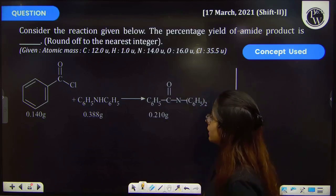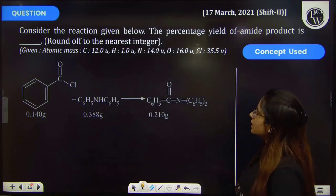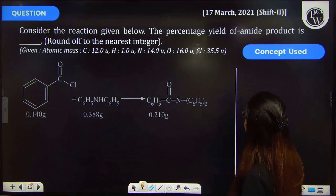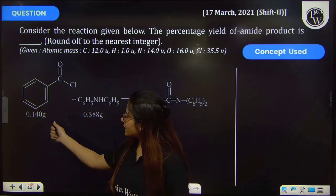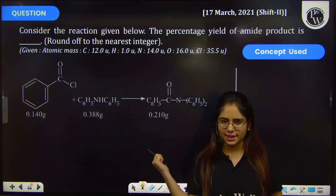Let's see this previous year question. The question says consider the reaction given below. The percentage yield of amide product is—you have a reaction given and you have to tell the percentage yield.